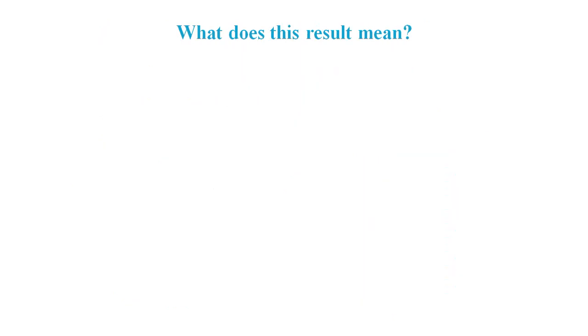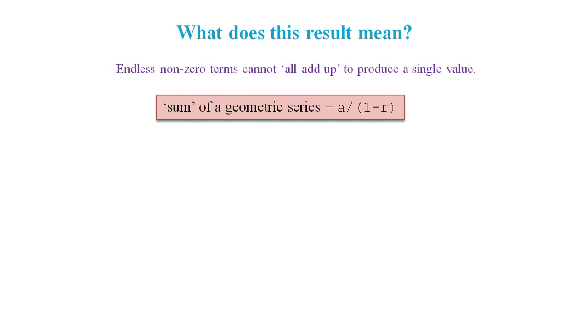So let's consider what this result means. It means endless non-zero terms cannot sum to a constant. It means the textbook formula for the sum of a geometric series is totally invalid. It means the 10x minus x proof is invalid. It means the series 0.9 recurring cannot equal 1.